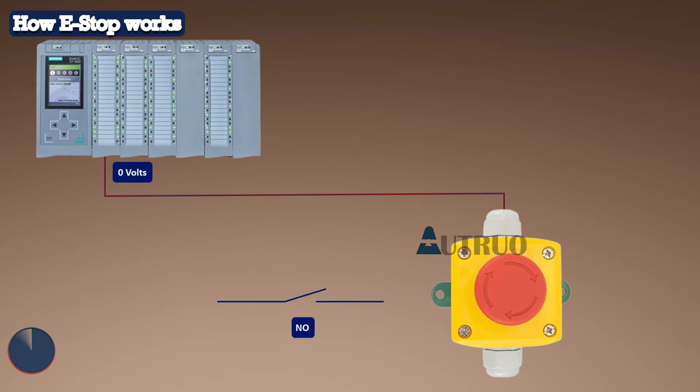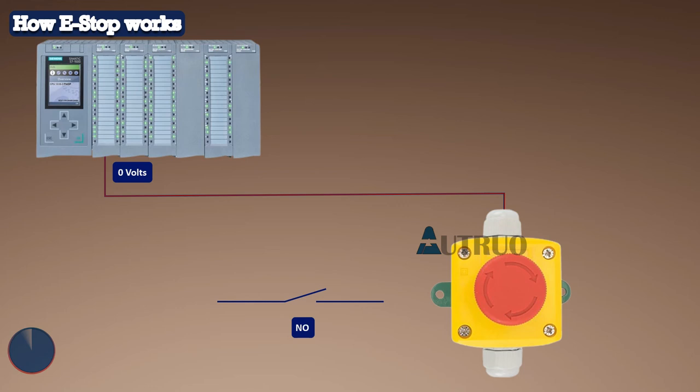The reason it should be terminated this way is to prevent a situation where, in a normally open configuration, when the button is pressed, the PLC will still believe that the button is not pressed — because sometimes the button can be defective.